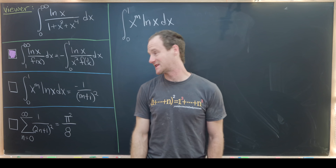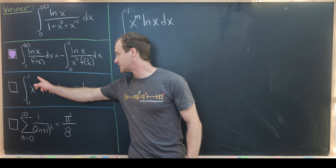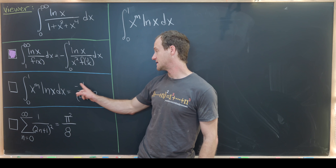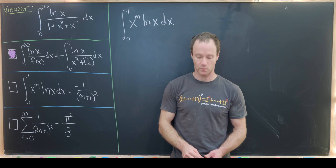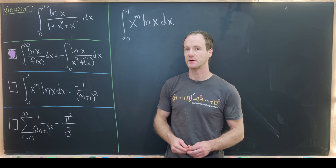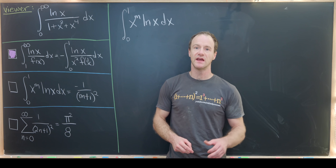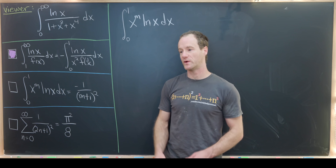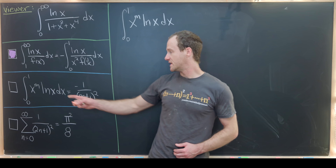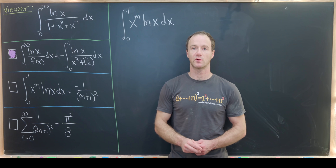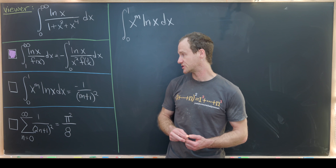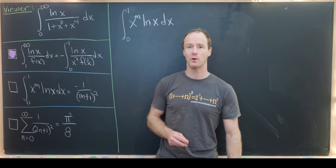Now we're going to look at the second tool and show that the integral from 0 to 1 of x to the m times natural log of x equals minus 1 over (m+1) squared. There are two main strategies: we could use integration by parts with induction, or do a change of variables to work with exponential functions and use a simpler integration by parts argument. That's exactly what we'll do.